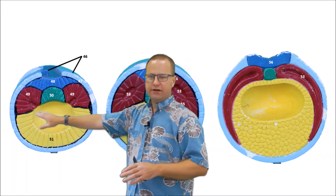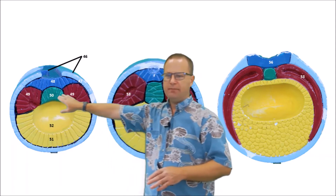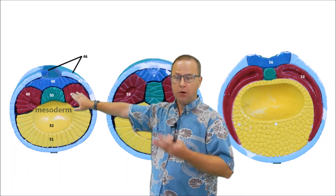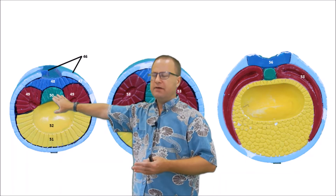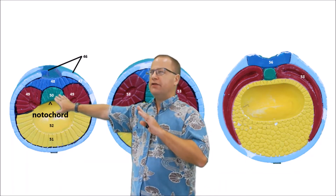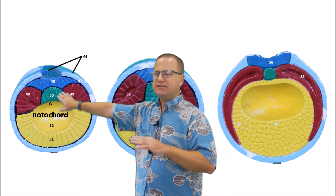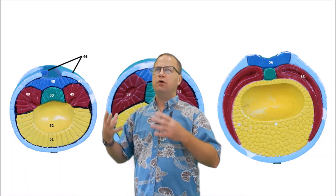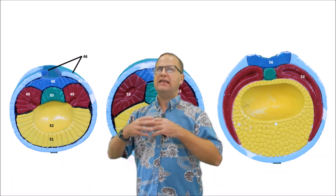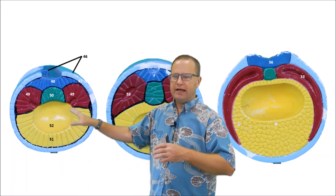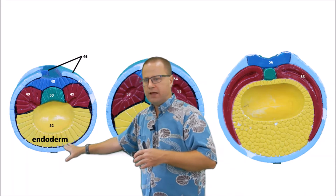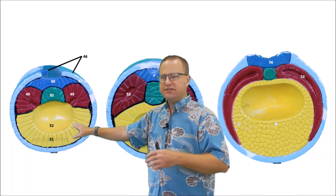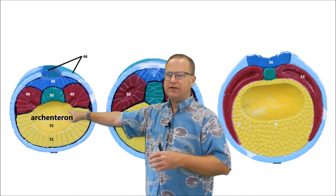Next, this red tissue right here was our mesoderm. This mesoderm will go on to become muscle tissue and connective tissues like bone. And what we can see right here in the middle is our notochord. The notochord was derived from the mesoderm, and it basically comprises a rudimentary spine that helps to give support to the embryo until we can form a legitimate vertebral column. Down below we can see the endoderm, which will form the lining of the GI organs, and this cavity right here is probably best termed the archenteron.